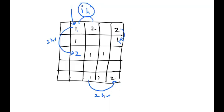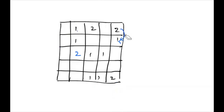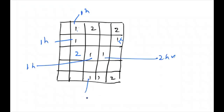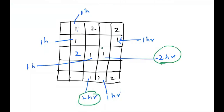Once we have the shortest distance for every fresh orange, we return the maximum of all those distances. If the maximum is infinity, we return -1. For example, if shortest distances are 1, 1, 1, 2, 2, 1, 1, the answer is 2 hours — the entire matrix rots in two hours. For finding shortest distances, we use BFS — breadth-first search.